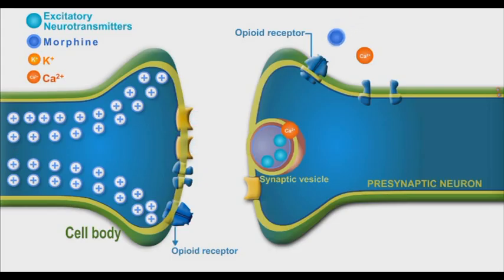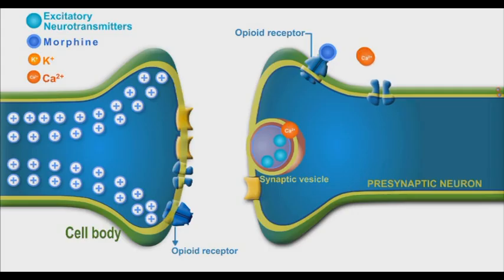Binding of opioids such as morphine to their internal opioid receptors disturbs the neuronal membrane action potential, which results in the blocking of calcium channels. A decrease in external calcium influx will significantly attenuate the pain sensation in transmission.